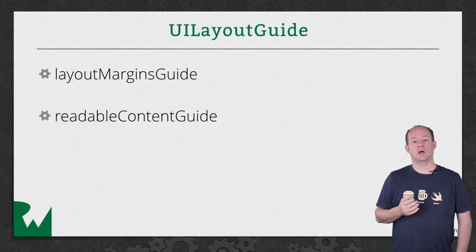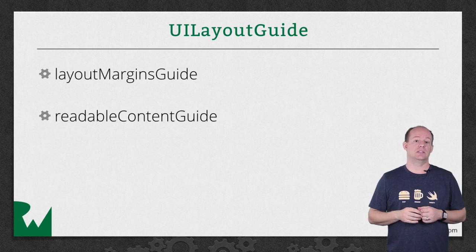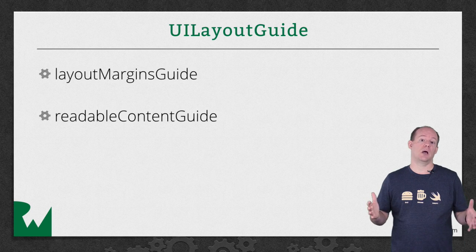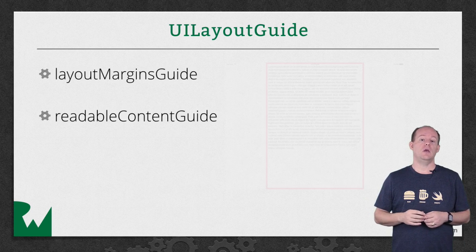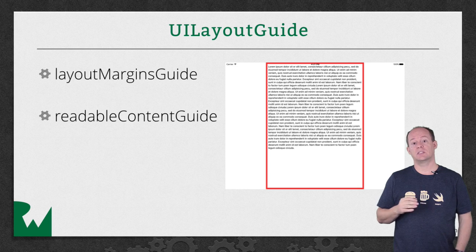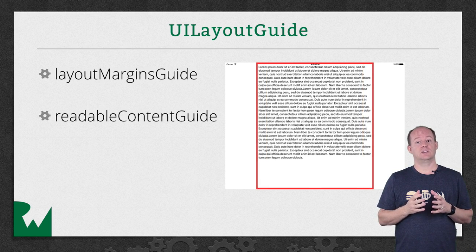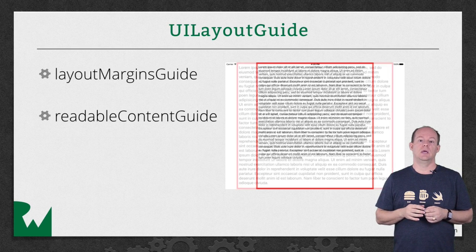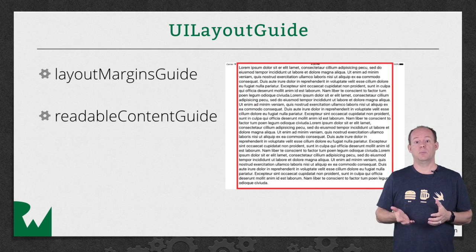Readable Content Guide is a new concept in iOS 9. The width of this guide is changed by the system depending on the user's selection of font size. Its purpose is to help improve readability and legibility of large blocks of text. For smaller font sizes it's hard to keep track of which line is next if the block of text is too wide. But with larger font sizes, if the block of text is too narrow, the user has to scan back and forth too frequently. This guide helps solve that problem by adjusting its width depending on the font size.